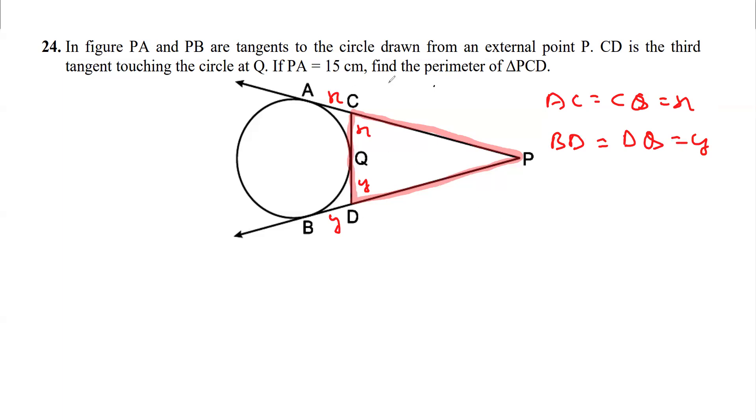Now since this whole length is 15, I can say that this part is x, so this will be 15 minus x. And as you know, tangent from same exterior point are equal, so PA is equal to PB.